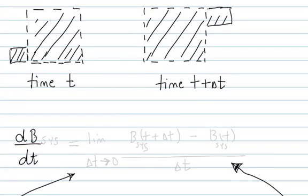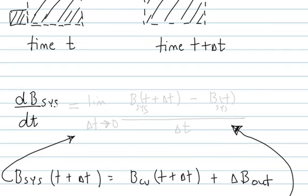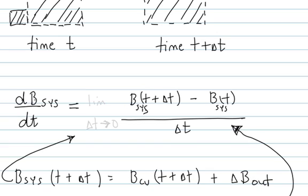Let's start with the idea of the time rate of change of some quantity b in the system. b can be mass, energy, or momentum — it's whatever we want to conserve. We write the first derivative of this, defined as b in the system at time t plus delta t, minus b in the system at time t, divided by delta t, and we take the limit as delta t goes to zero.